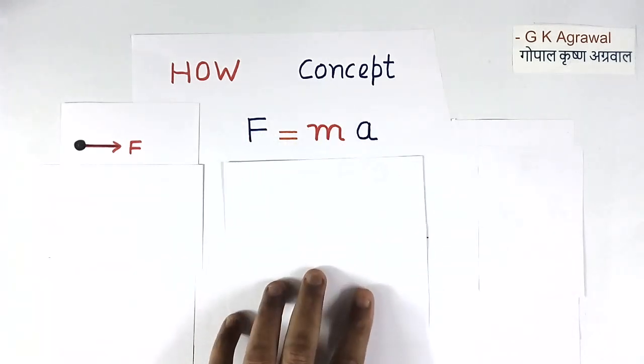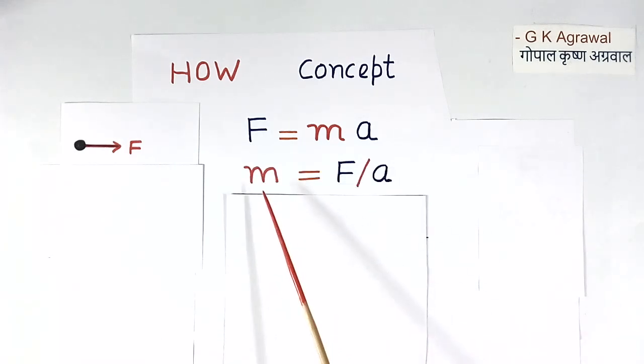This formula can be written in this way also. We can bring A to the other side. Then mass will become equal to force divided by acceleration.